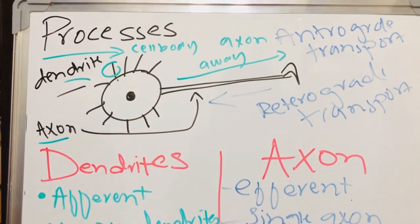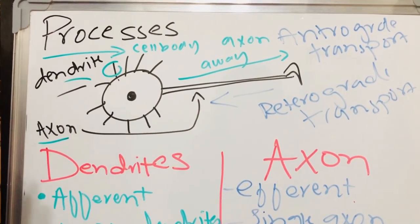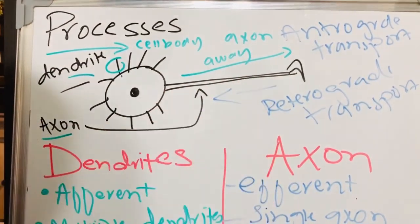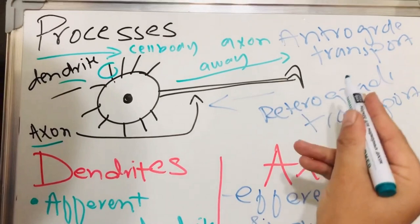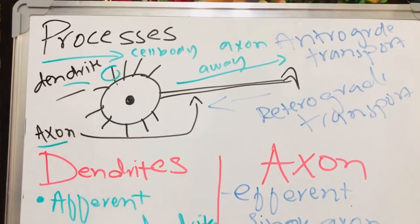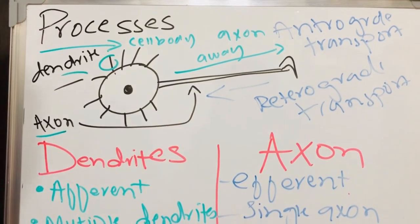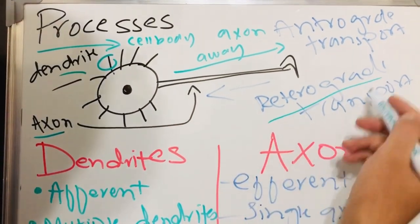In axons we have two types of transport. First, the sensory information towards the axon terminal is called anterograde transport, and if it is away from the axon terminal it is called retrograde transport.